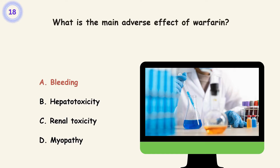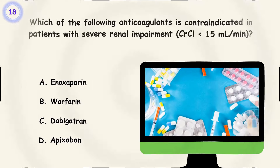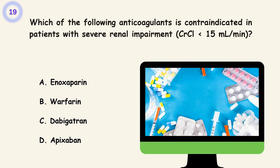Question 19. Which of the following anticoagulants is contraindicated in patients with severe renal impairment, CrCl less than 15 milliliters per minute? A. Enoxaparin. B. Warfarin. C. Dabigatran. D. Apixaban. Answer is C. Dabigatran.